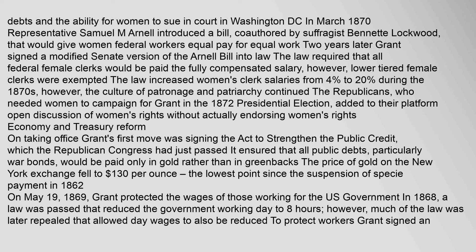The early women's suffrage movement led by Susan B. Anthony and Elizabeth Cady Stanton gained national attention during Grant's presidency. In March 1870, Representative Samuel M. Arnell introduced a bill co-authored by suffragist Belva Lockwood that would give women federal workers equal pay for equal work. Two years later Grant signed a modified Senate version into law. The law required that all federal female clerks would be paid the fully compensated salary, increasing women's clerk salaries from 4% to 20% during the 1870s, though the culture of patronage and patriarchy continued.